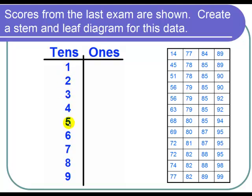So I have 1, 2, 3, 4, 5, 6, 7, 8 and 9 for my tens digits.